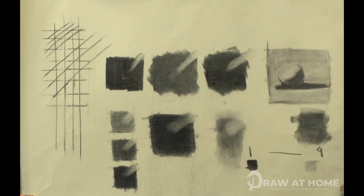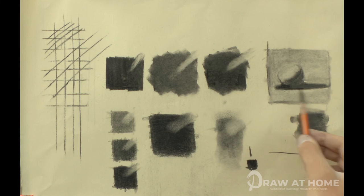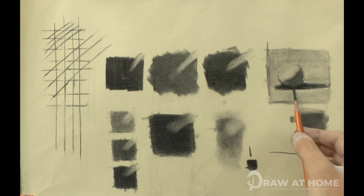Using the 4B again to darken the cast shadow under the sphere helps give a sense of 3 dimensions. Using the stump to just blend it into the shadows.